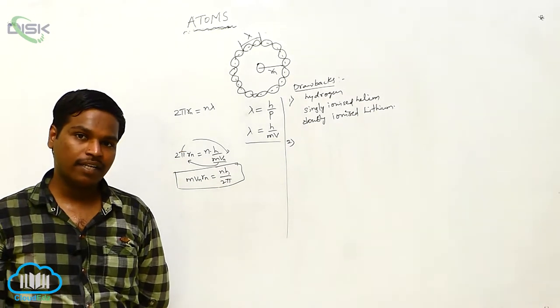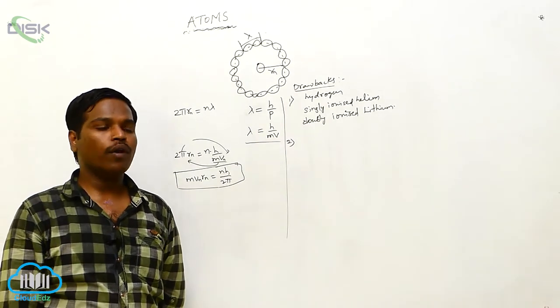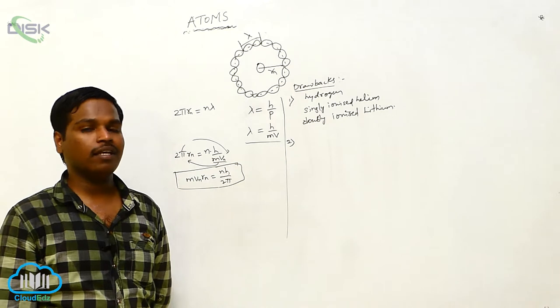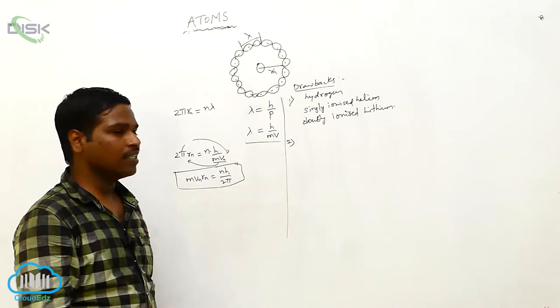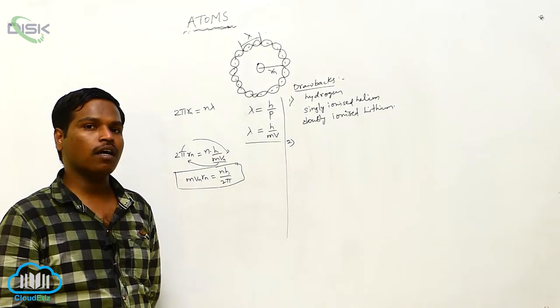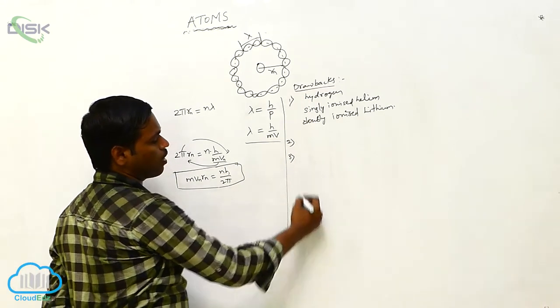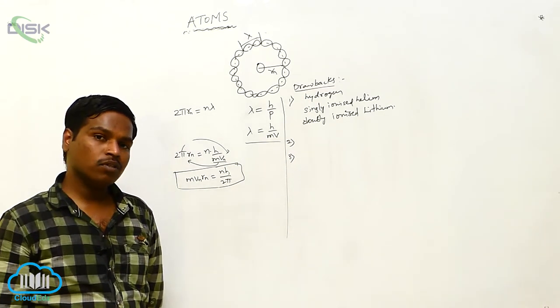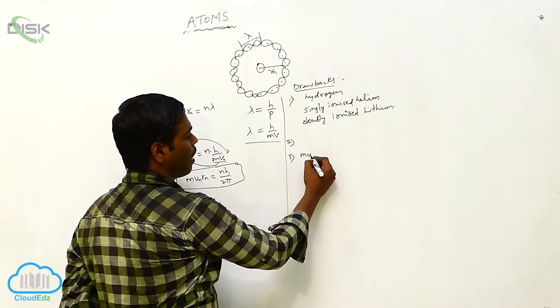Some spectral lines have more intensity and some have less intensity. Why we have different intensities for the spectral lines is not explained by Bohr's atomic model.